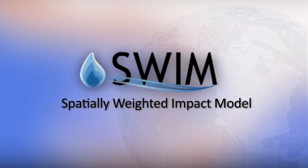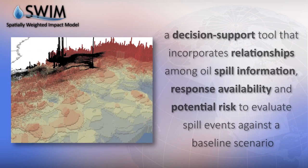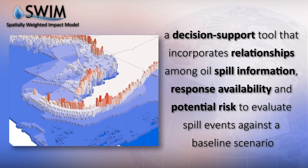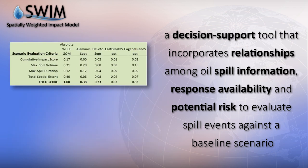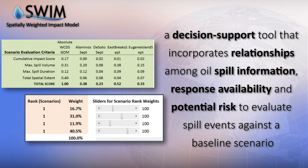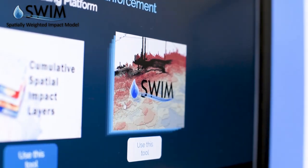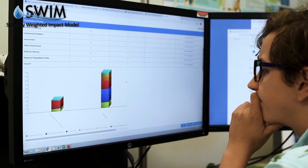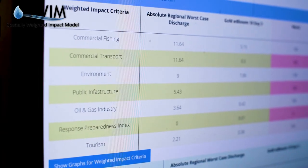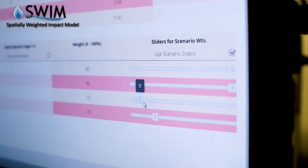The Spatially Weighted Impact Model is a decision support tool that incorporates relationships among oil spill information, response availability, and potential risk to evaluate spill events against a baseline scenario. It's really designed to help users of the Offshore Risk Modeling suite evaluate different decision scenarios to help them make strategic plans and prepare for what-ifs and what may happen.